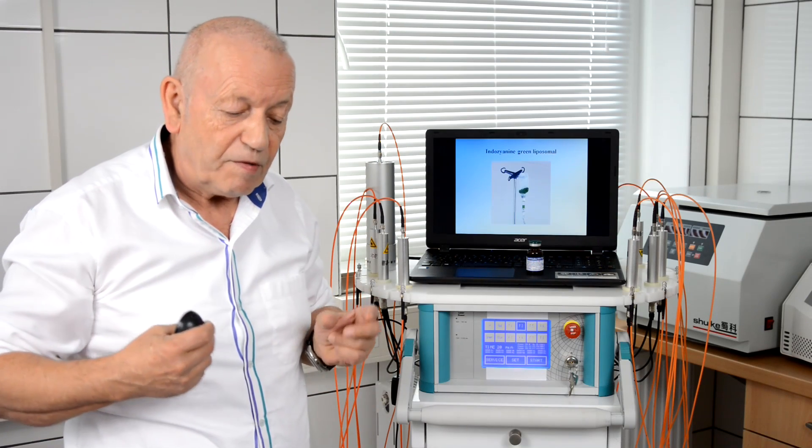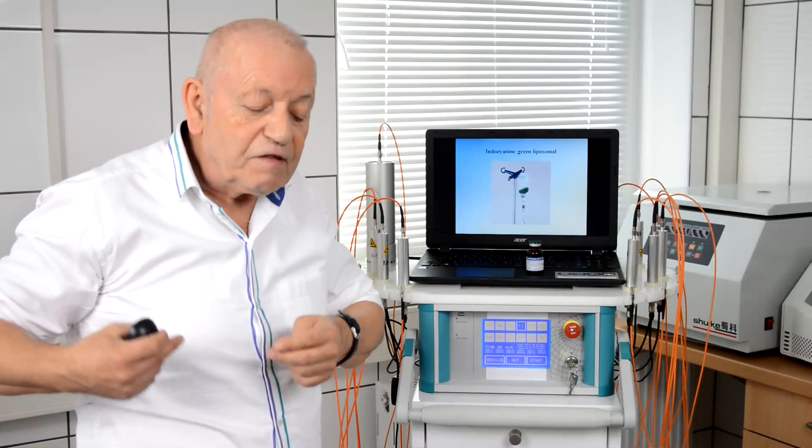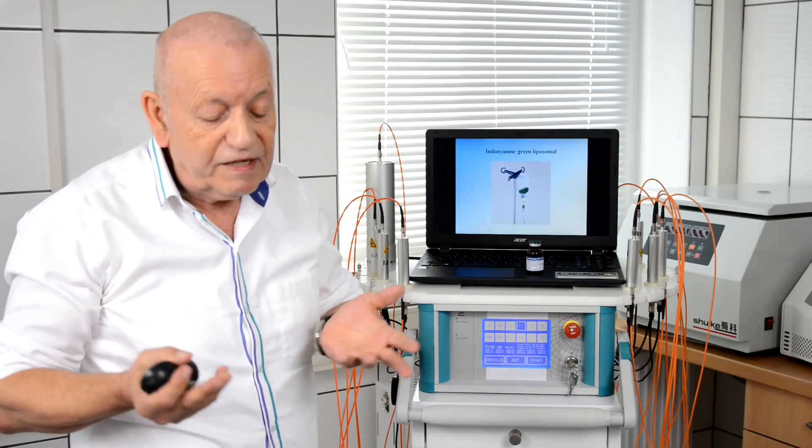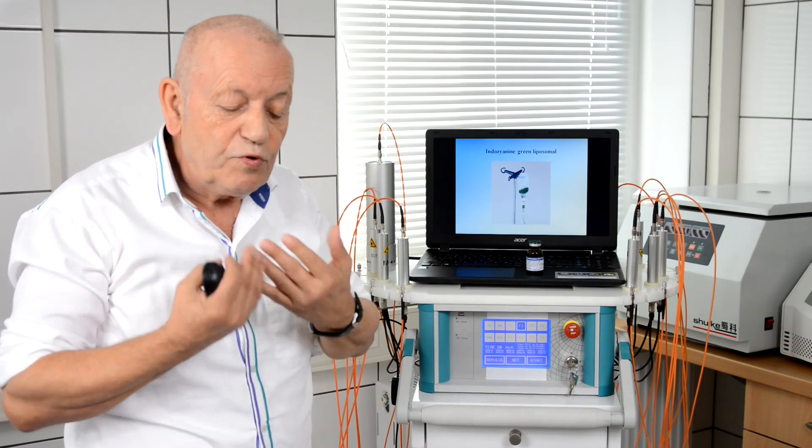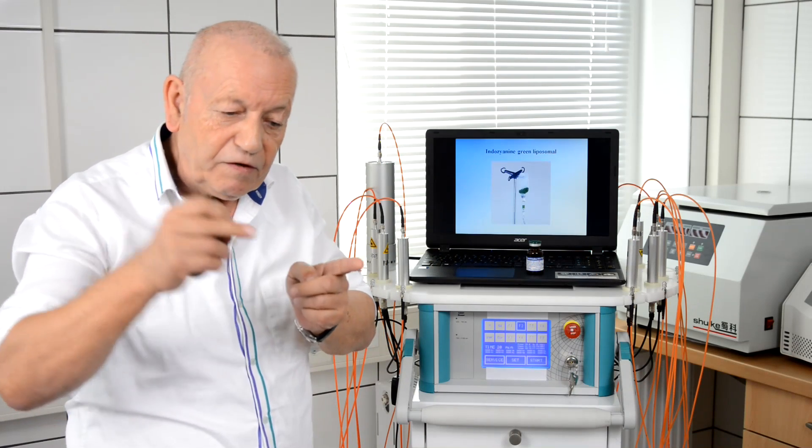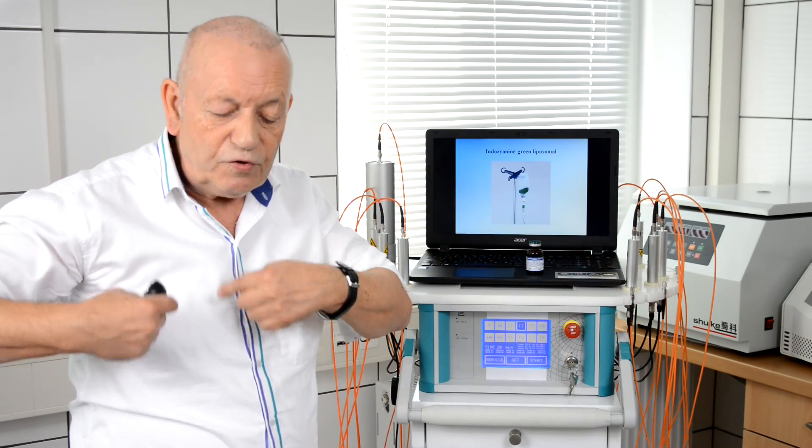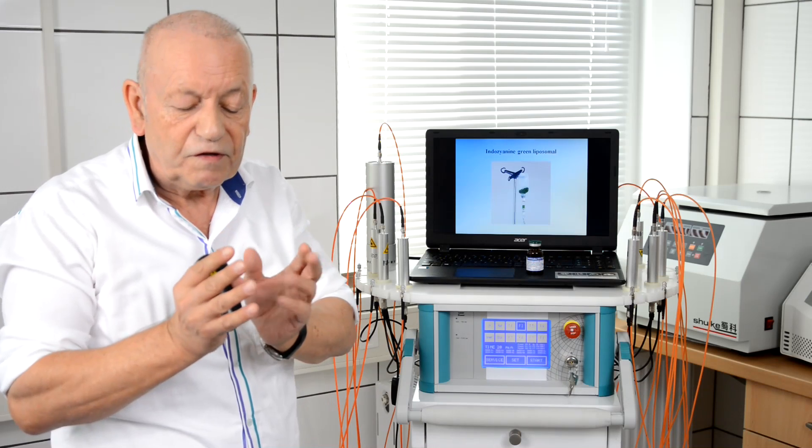We can do it in two ways. One way is the irradiation from outside, maybe if it is a breast cancer. But still the penetration is limited. So to improve this we put fiber optic needles, that means needles with sterile fiber optics, close around the tumor to overcome the resistance of the skin.